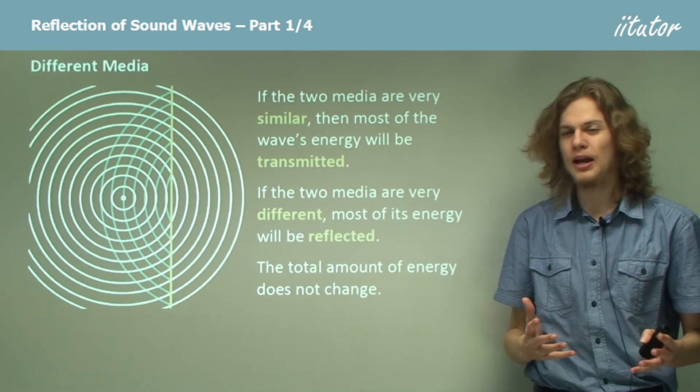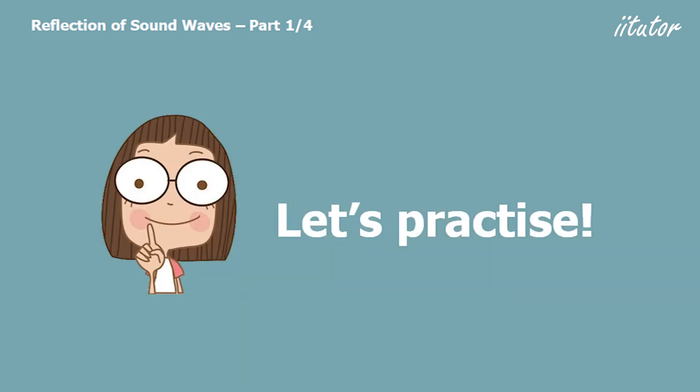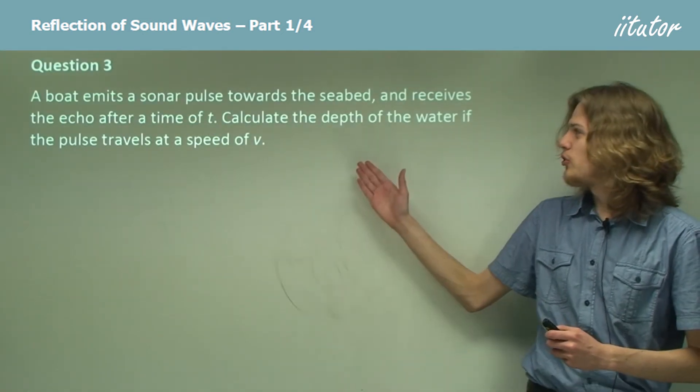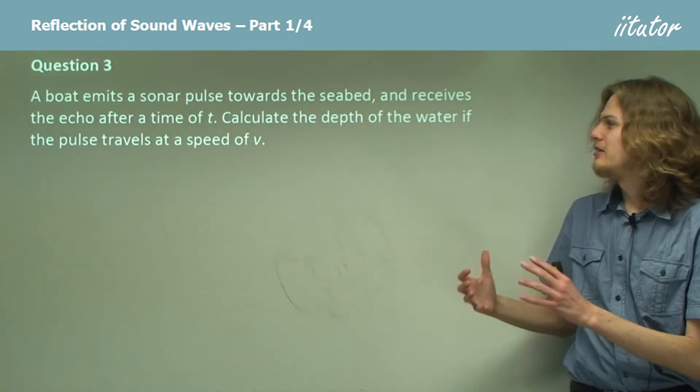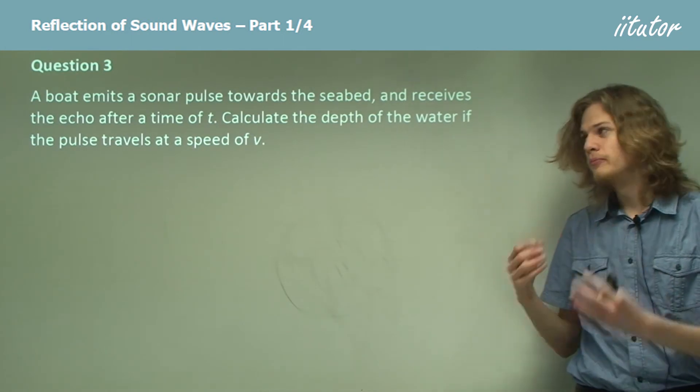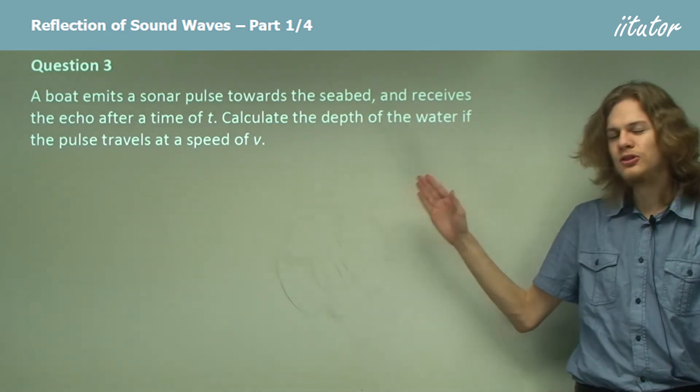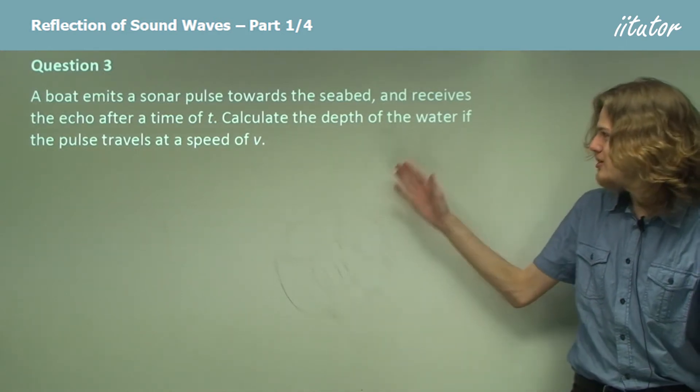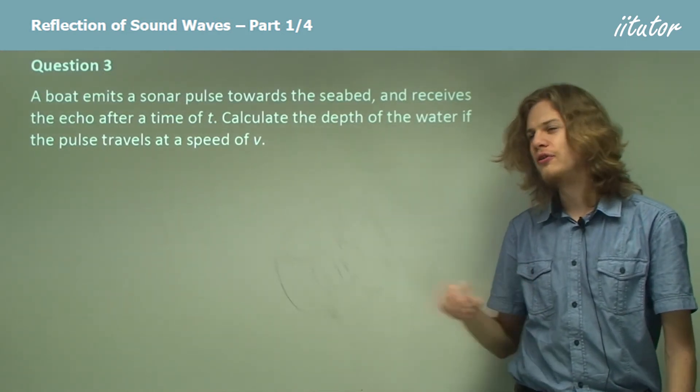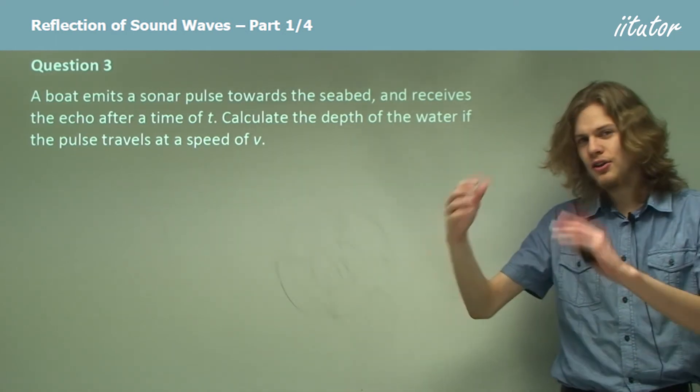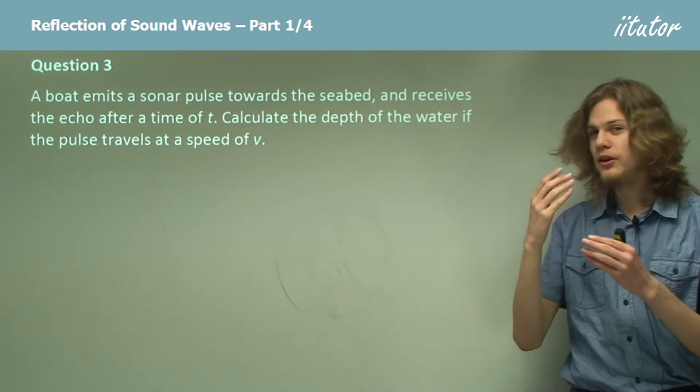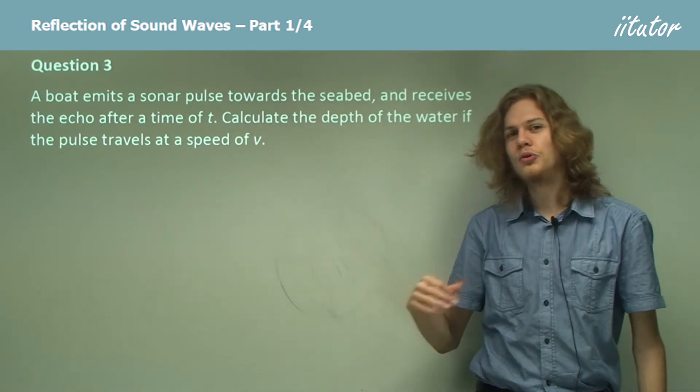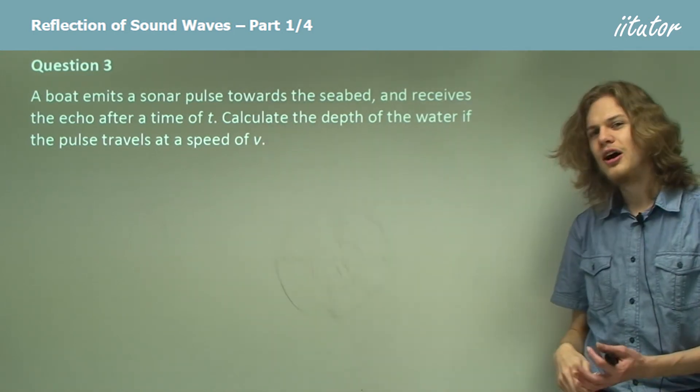A boat emits a sonar pulse toward the seabed and receives the echo, the reflection, after a time of t. Calculate the depth of the water if the pulse travels at a speed of v. So we send out a sound pulse that travels at a speed of v, we wait for a bit, and then after time t we receive the reflection. Let's draw a diagram to help us.